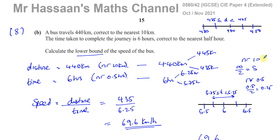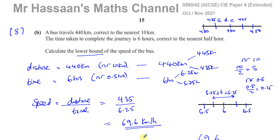I hope that was understood. Upper and lower bounds is a very important topic. Other questions from this October 2021 paper 4 variant 2, 0580 syllabus — including part A of question 8 — can be found in the playlist. Other questions on upper and lower bounds are in the related playlist. You can subscribe to the channel by clicking the link. Thank you for watching and see you soon.